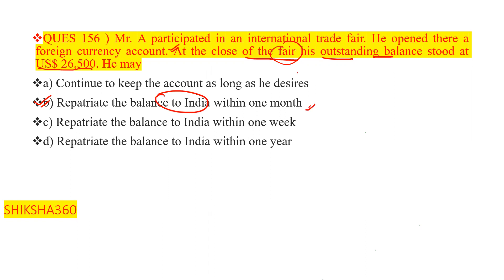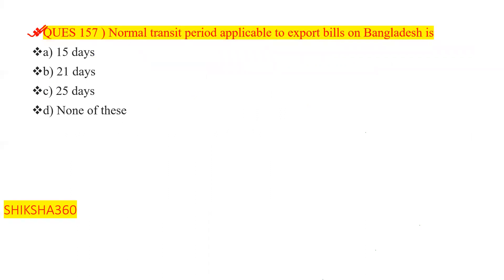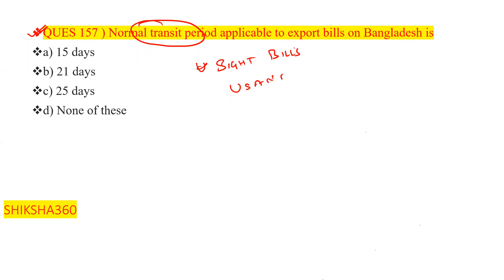Question Number 157 relates to the normal transit period, which was discussed in yesterday's session for sight bills. The normal transit period applicable to export bills on Bangladesh is — 15 days, 21 days, 25 days, or none of these. The correct answer is option C — 25 days.